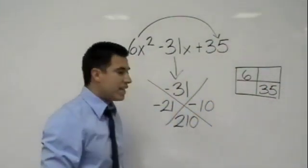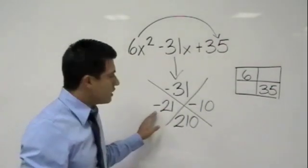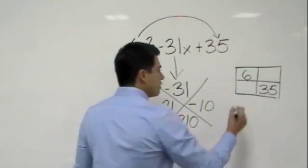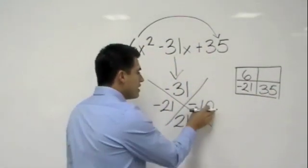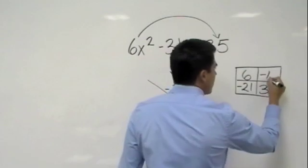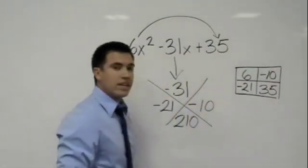Far right number goes to the bottom right box—that's a positive 35. And now we just put our negatives here. That would be a negative 21, and we could put a negative 10 there if we wanted to. And this would be a negative 10.